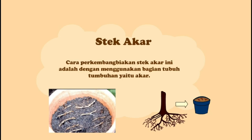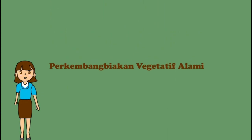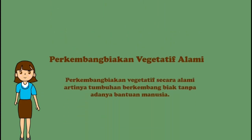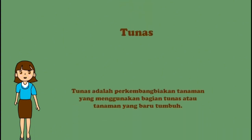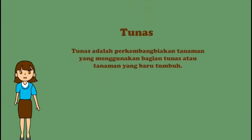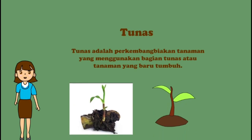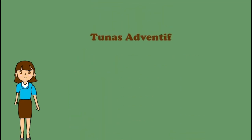Rahasianya adalah mencabut akar yang tumbuh dan memotong akar dengan diameter 5 hingga 10 cm. Perkembangbiakan vegetatif alami artinya tumbuhan berkembang biak tanpa adanya bantuan manusia. Yang pertama, tunas. Tunas adalah perkembangbiakan tanaman yang menggunakan bagian tunas atau tanaman yang baru tumbuh. Contoh tumbuhan bertunas terjadi pada tanaman pisang, tebu, dan bambu.